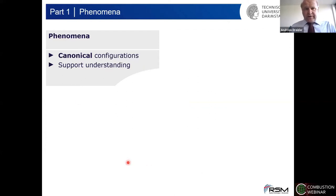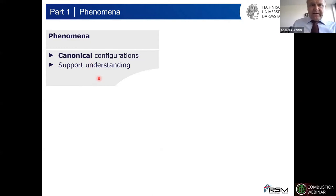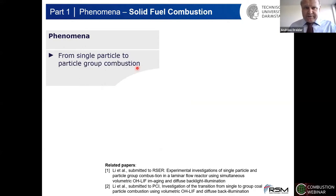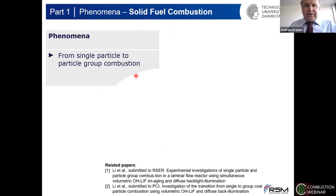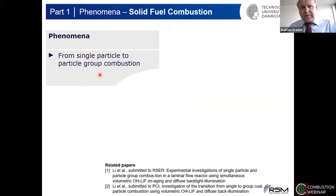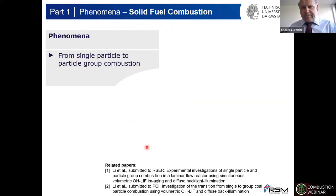I would like to start with phenomena, where we use canonical configurations to support our physical and chemical understanding of processes. I've selected solid fuel combustion — it could be biomass, it could be coal. The example I've chosen is coal, and the phenomenon we are looking at is the transition from single particle combustion to particle group combustion. This is ongoing work done by my PhD students Tao Li and Chris Geschwindner.